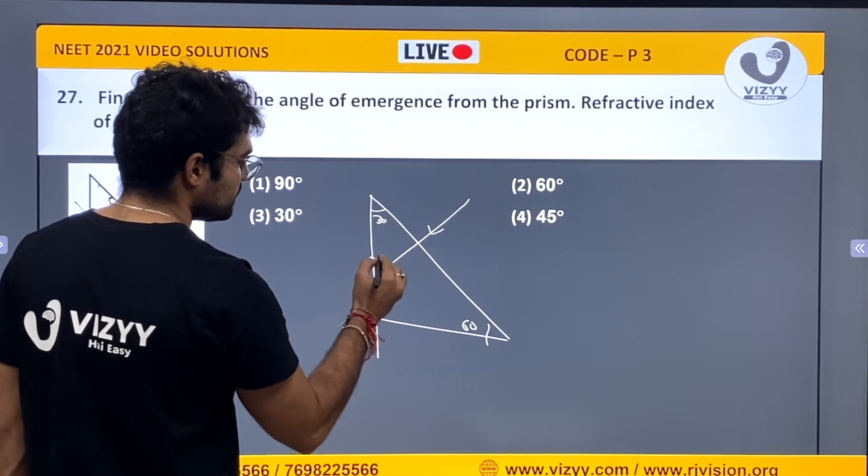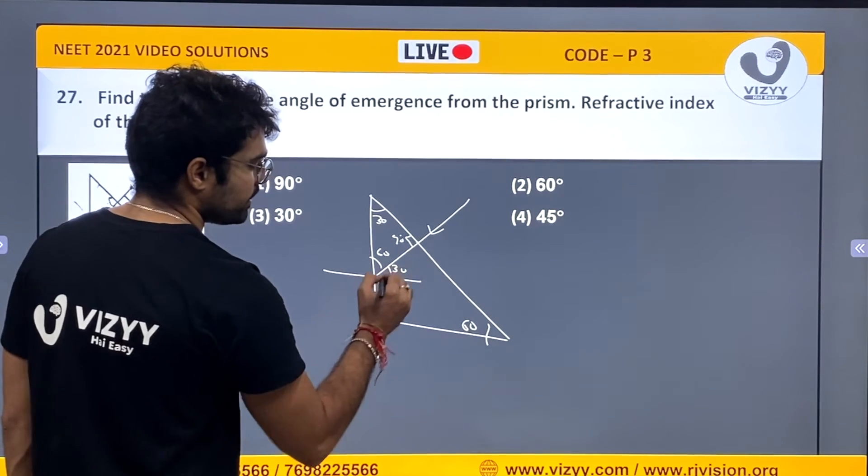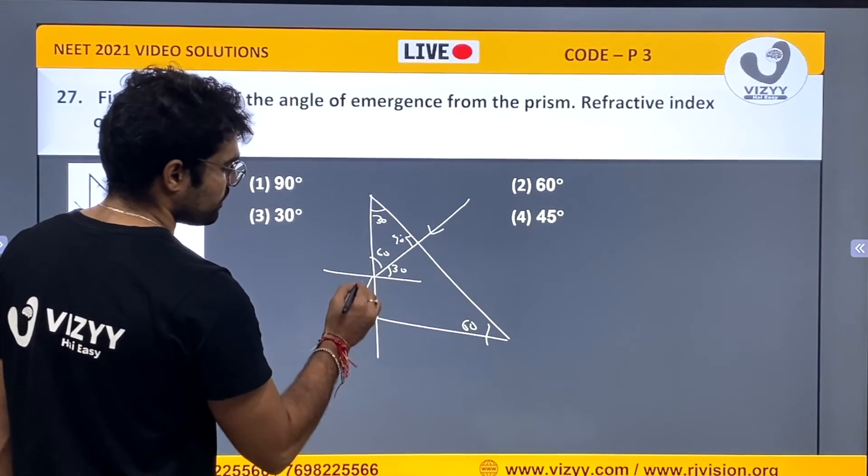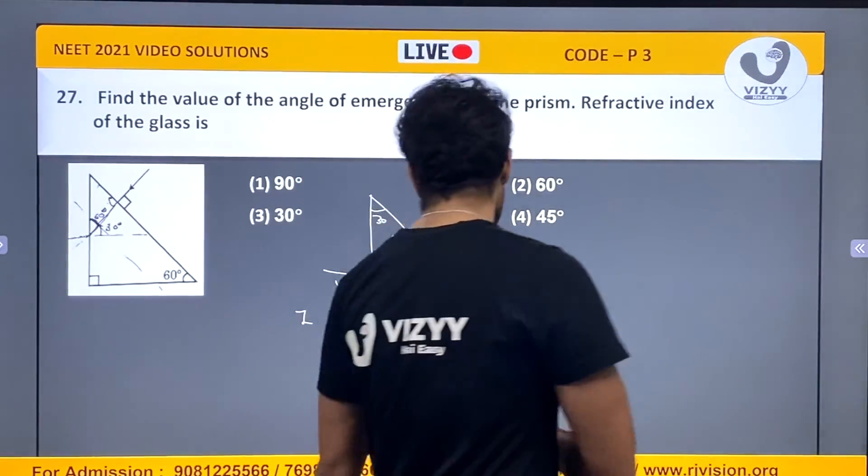This angle is 30 degree which means this angle will be 60 because this is 90. So here this angle will be 30 degree. So refracted ray will be like this, which is making angle R. Its refractive index is root 3, and this is 1. So we will apply Snell's law.